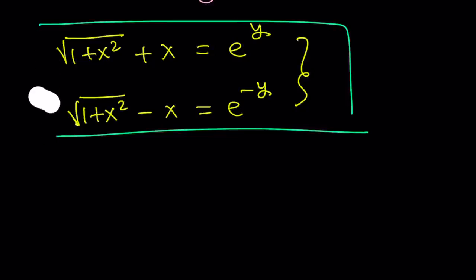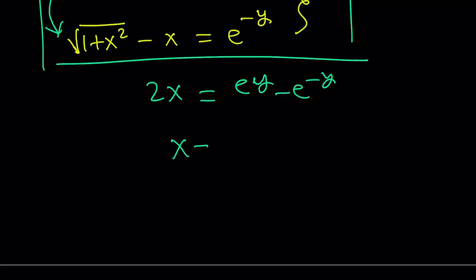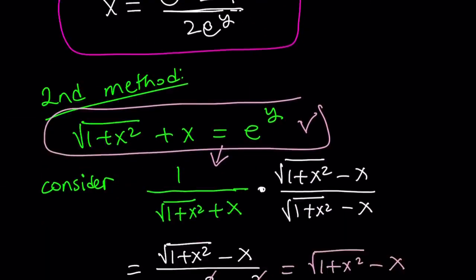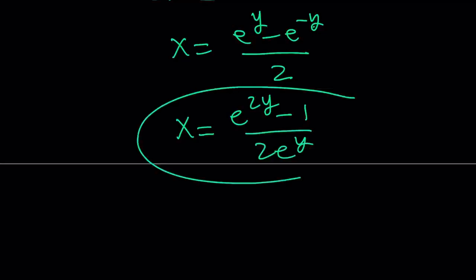Instead of adding, I'm going to subtract these equations. When I do, the radicals are going to cancel out and I'm going to end up with 2x, which is really cool because that gets me to x faster. So x becomes e to the power y minus e to the power negative y, all divided by 2. Now why is this equivalent to the first method? Because we can still make a common denominator — our expression contained e to the power 2y. You can multiply top and bottom by e to the power y, and when you multiply e to the power negative y by e to the power y it becomes 1, and you get the same result as before.